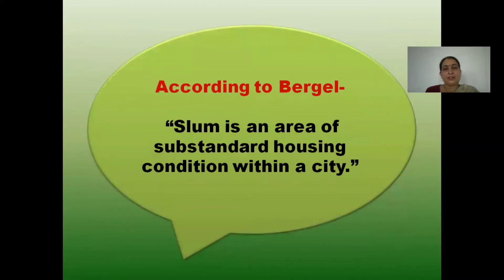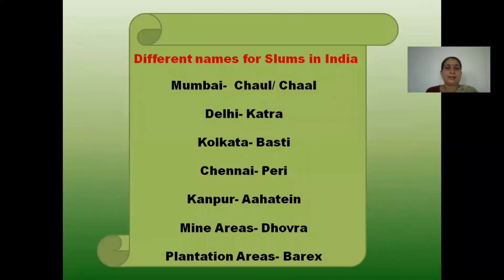Another definition comes from urban sociologist Bargil. According to him, a slum is such an area where people who need to live get only lower-level amenities and facilities. In our country, slums are known by different names in different places. In Mumbai, we know it as Chol or Chal.